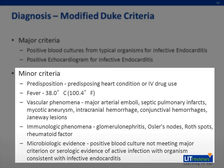The minor criteria are: a predisposing heart condition like congenital heart disease or IV drug use; fever of at least 38 degrees Celsius; vascular phenomenon defined as major arterial emboli, septic pulmonary infarcts, mycotic aneurysm, intracranial hemorrhage, conjunctival hemorrhage, or Janeway lesions; immunologic phenomenon defined as glomerulonephritis, Osler's nodes, Roth spots, or rheumatoid factor; and microbiologic evidence with a positive blood culture not meeting major criteria or serologic evidence of active infection with an organism consistent with infective endocarditis.